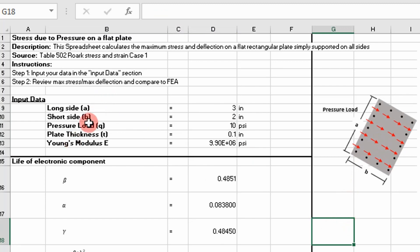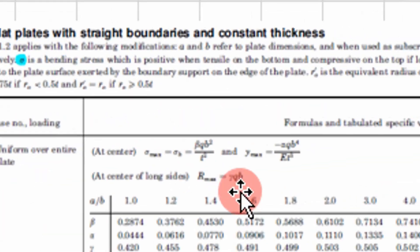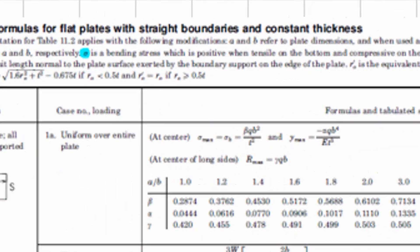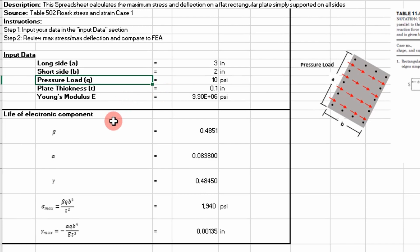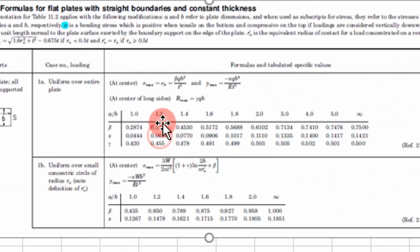So our inputs, as we continue down the list, we have our pressure load, which is going to be defined as Q in the equations over here in the table. We have our plate thickness, and then we have values that we go in to find what they are. So we have beta, alpha, and gamma. This comes from the tables.